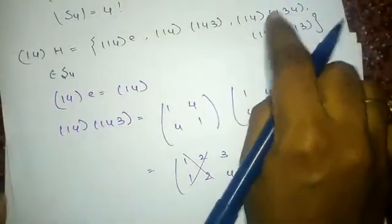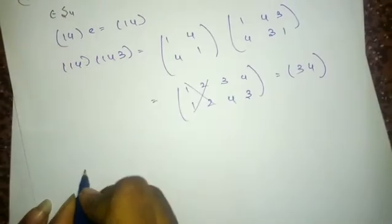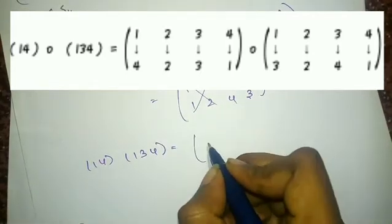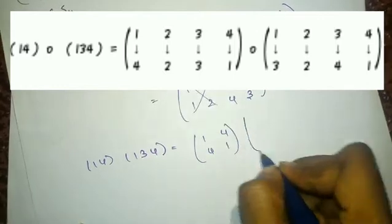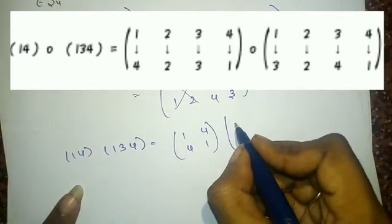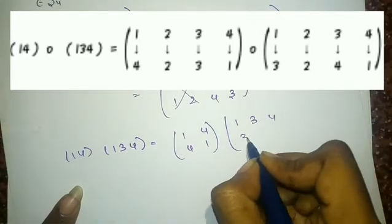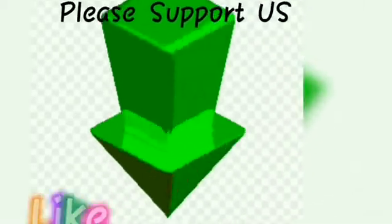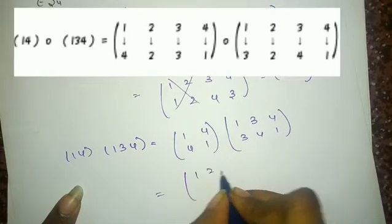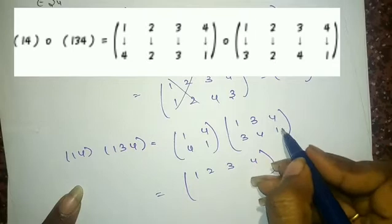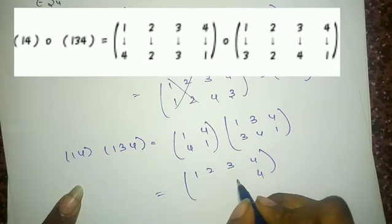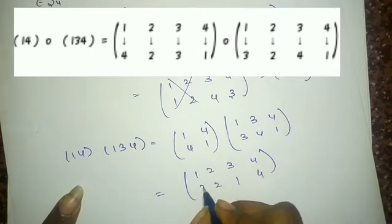Now if I do the composition mapping for (14)∘(134), by the same method I can compute it since I have already explained composition in my previous lecture. I am going to directly write the answer: working through 1,2,3,4 — 4 is mapped to 4, 3 is mapped to 1, 2 is mapped to 2, and 1 is mapped to 3. The result is (13)(...).